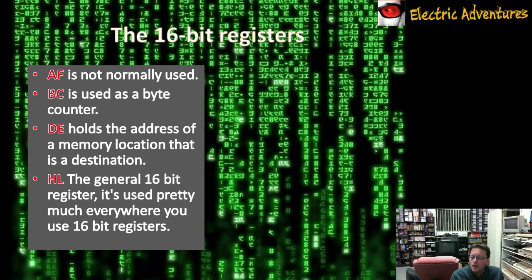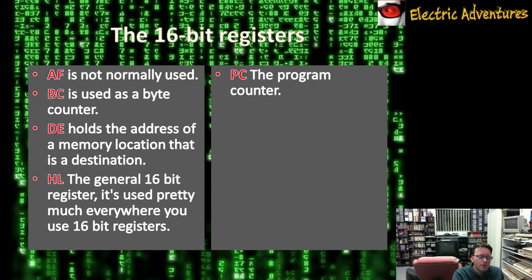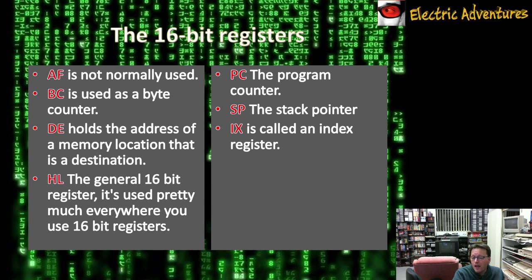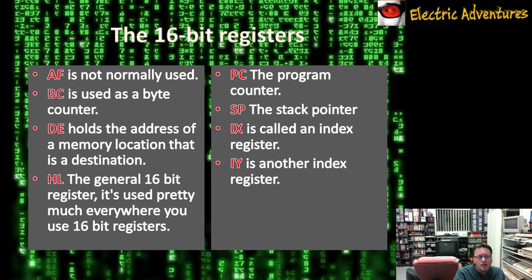HL is the workhorse of the 16-bit registers — it acts as the accumulator for 16-bit maths and is used to identify and point to an address. PC is the program counter — that's the spot you are up to in your actual program that's executing, and you can't change it except with special instructions. SP is the stack pointer — think of it as another way to easily push and pop things, like adding a piece of paper to a stack and taking them off in the same order you put them on. IX is an index register, useful for getting something at an address plus a number of bytes. IY is a similar register with some secondary functionality.